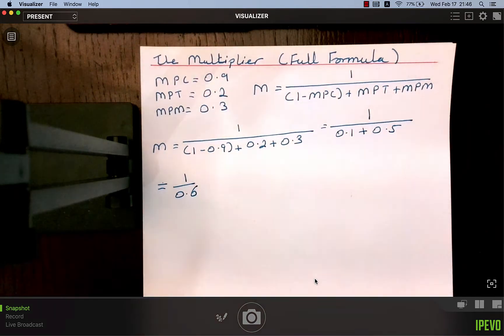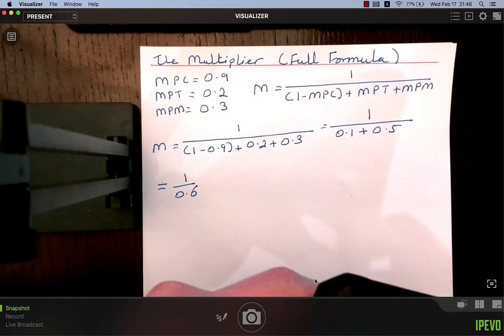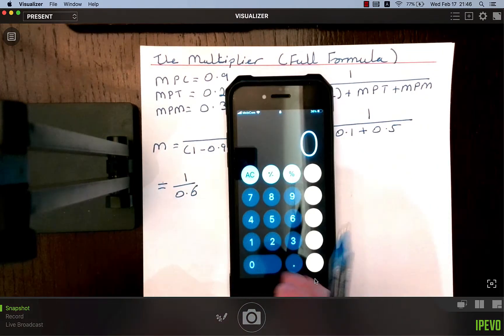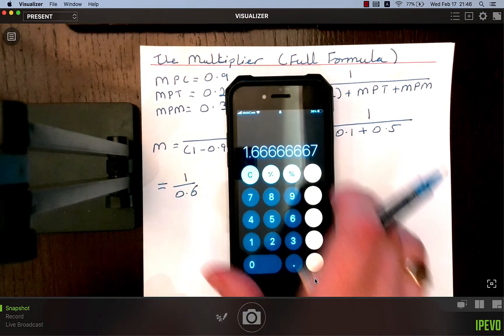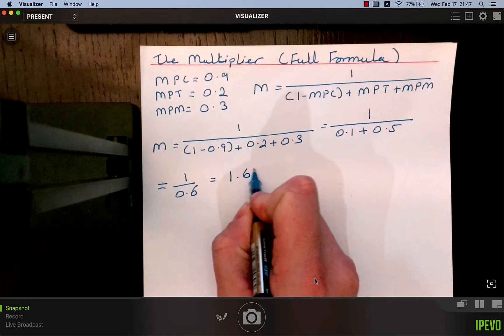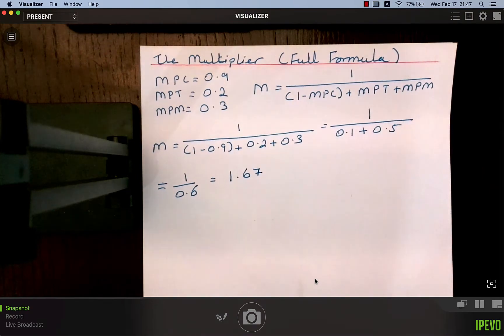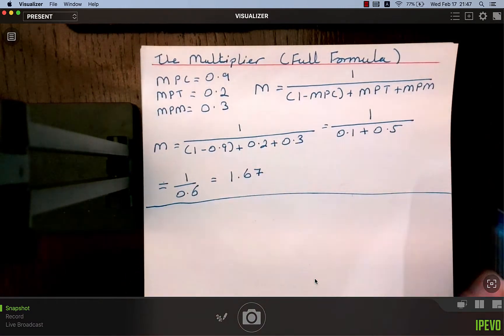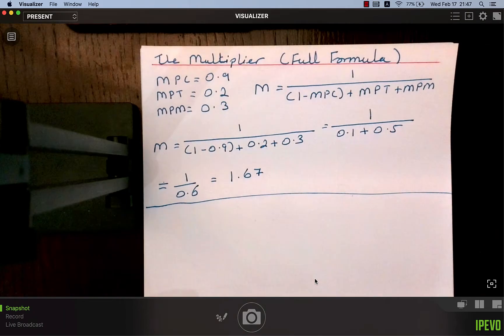I'm going to get my trusty calculator out on my phone. 1 divided by 0.6 equals 1.667, so 1.67. The economic meaning of this figure is that if there was an initial injection into the economy of 10 euro, the national income would rise by 16 euro and 70 cent. You multiply the initial injection by the multiplier to get the resultant increase in national income.